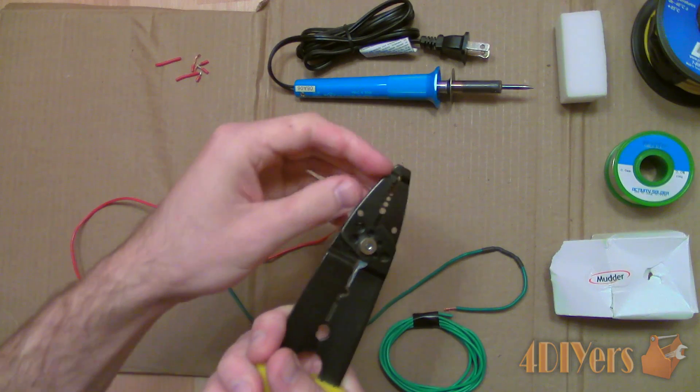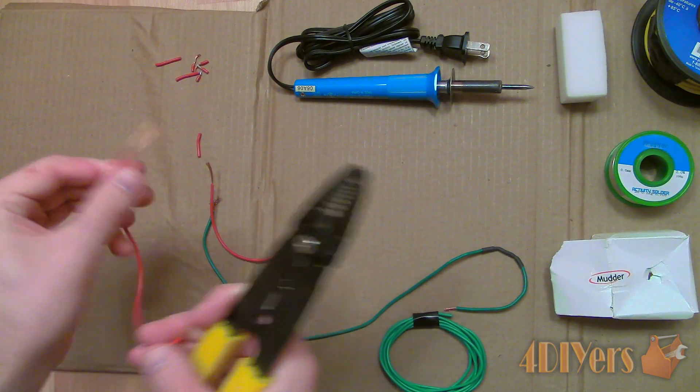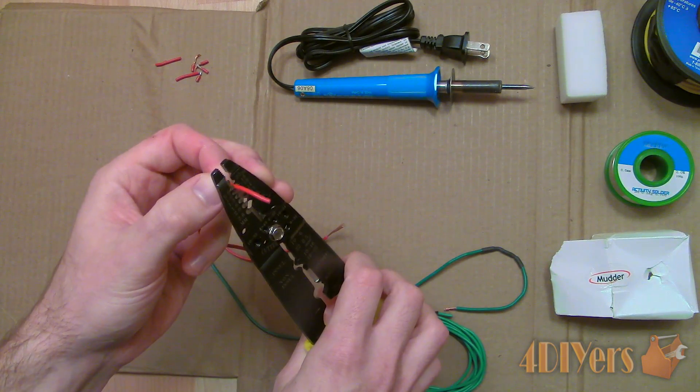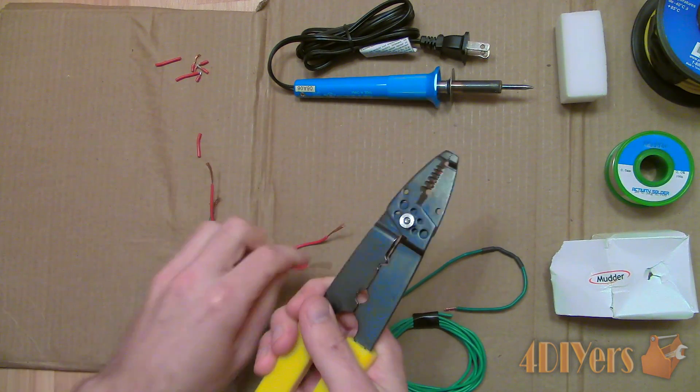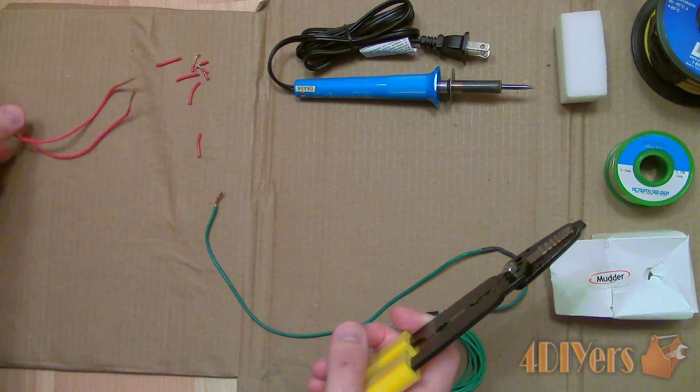Lead solder tends to be a little easier to work with, has a lower melting point, but is hazardous to both your health and the environment. Due to the change in environmental regulations, lead free solder is becoming more common. It does have a higher melting point, but it is able to withstand higher heat applications and is more environmentally friendly.